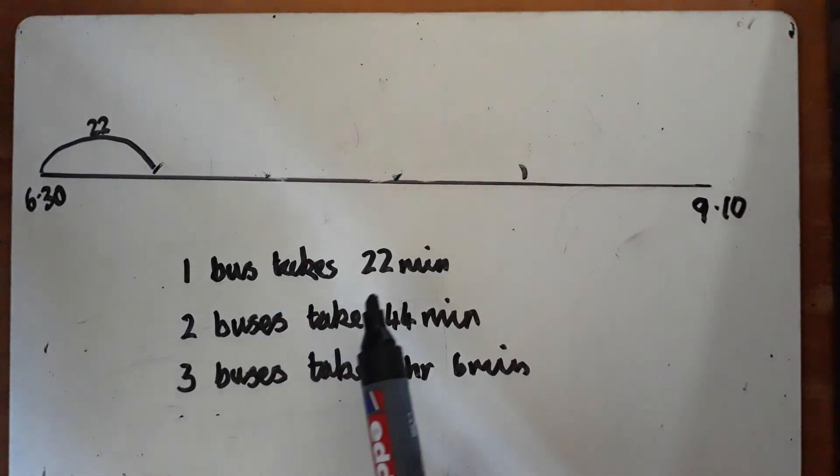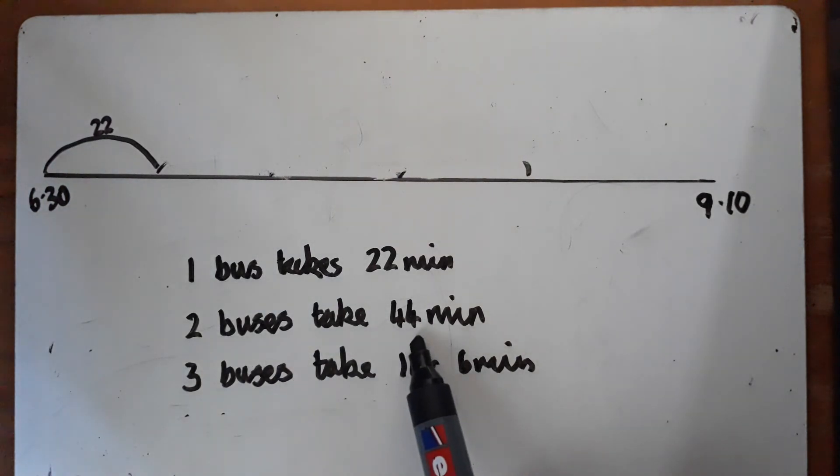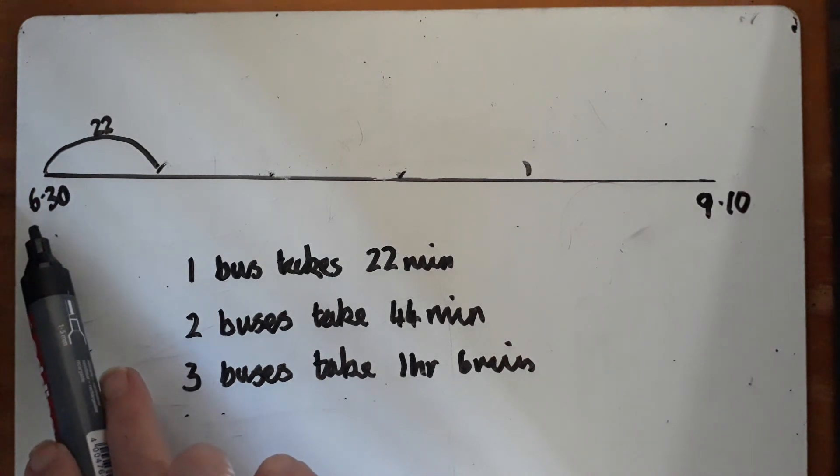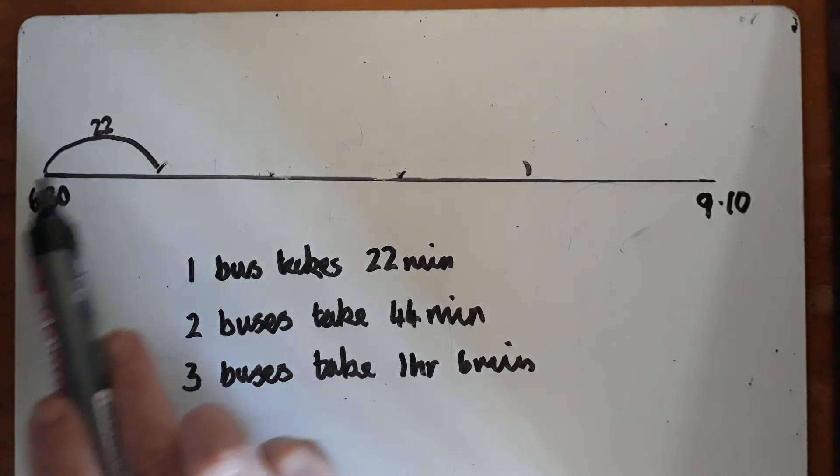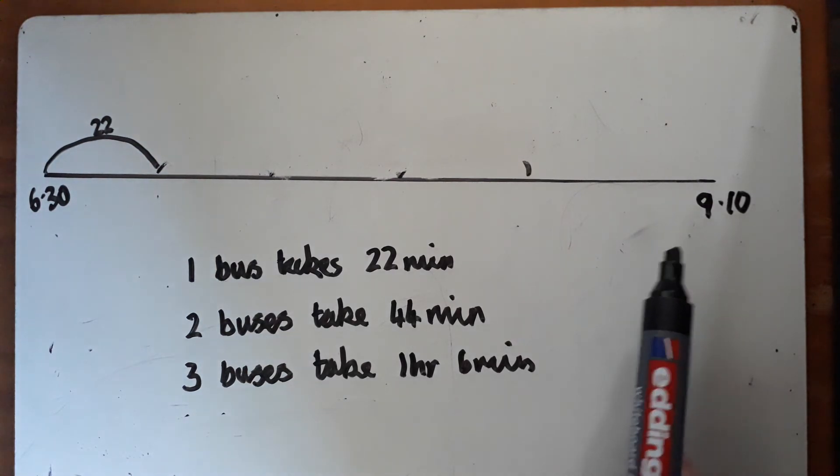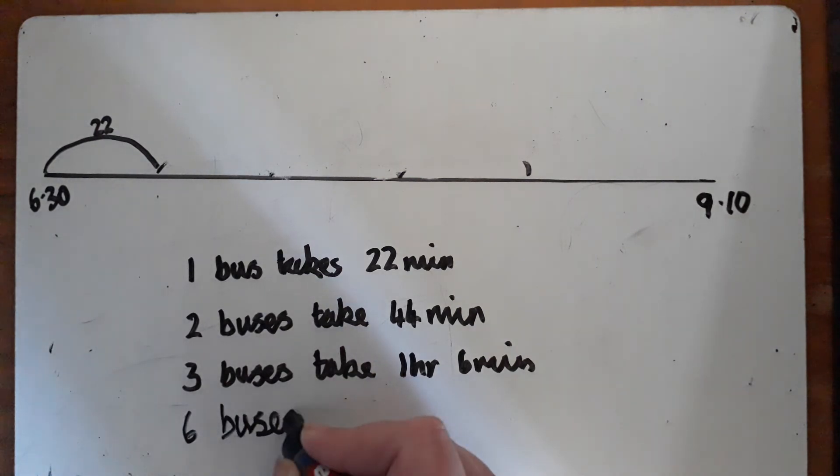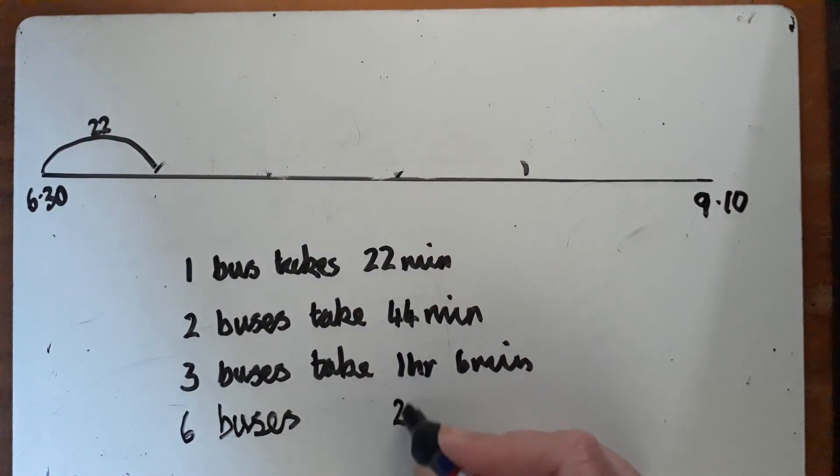We know one bus takes 22 minutes. When two buses have been, that will be 44 minutes. Three buses will be 1 hour and 6 minutes later. That would be 7:36, and I need to be much closer to 9:10. So I'm going to test six buses—that would be 2 hours and 12 minutes later.